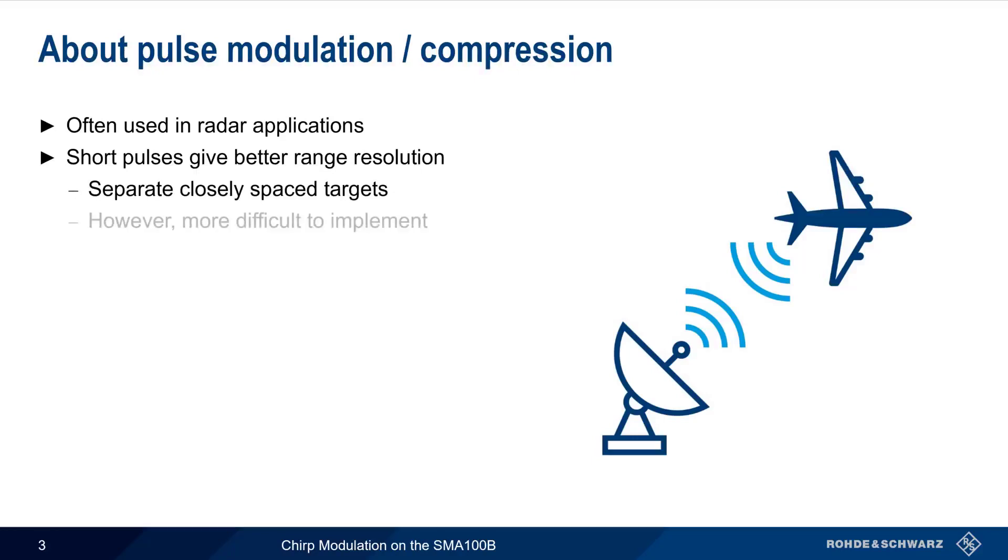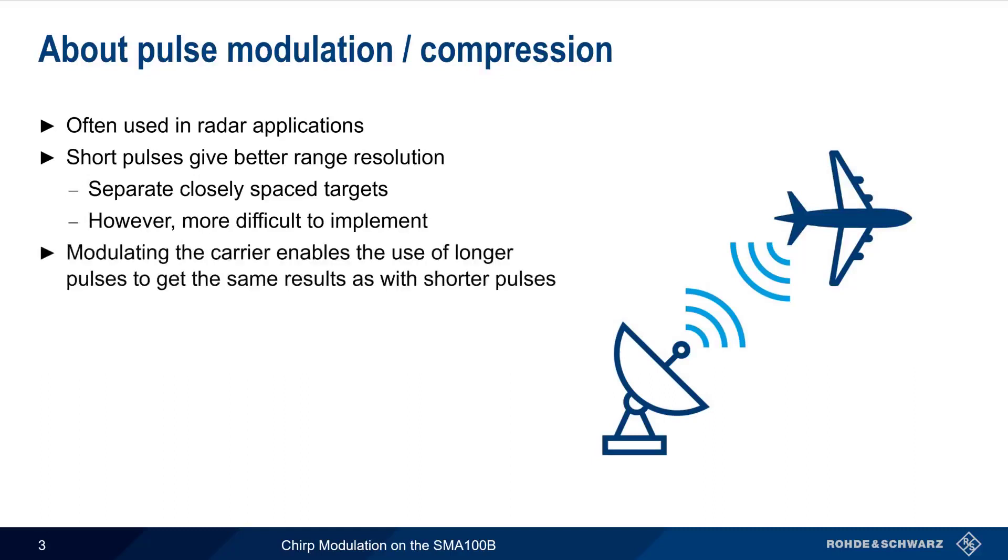However, using short pulses is difficult for a number of reasons, such as the need for high peak powers. Modulation enables us to use longer pulses to get the same performance as shorter pulses. For this reason, pulse modulation is also sometimes called pulse compression.